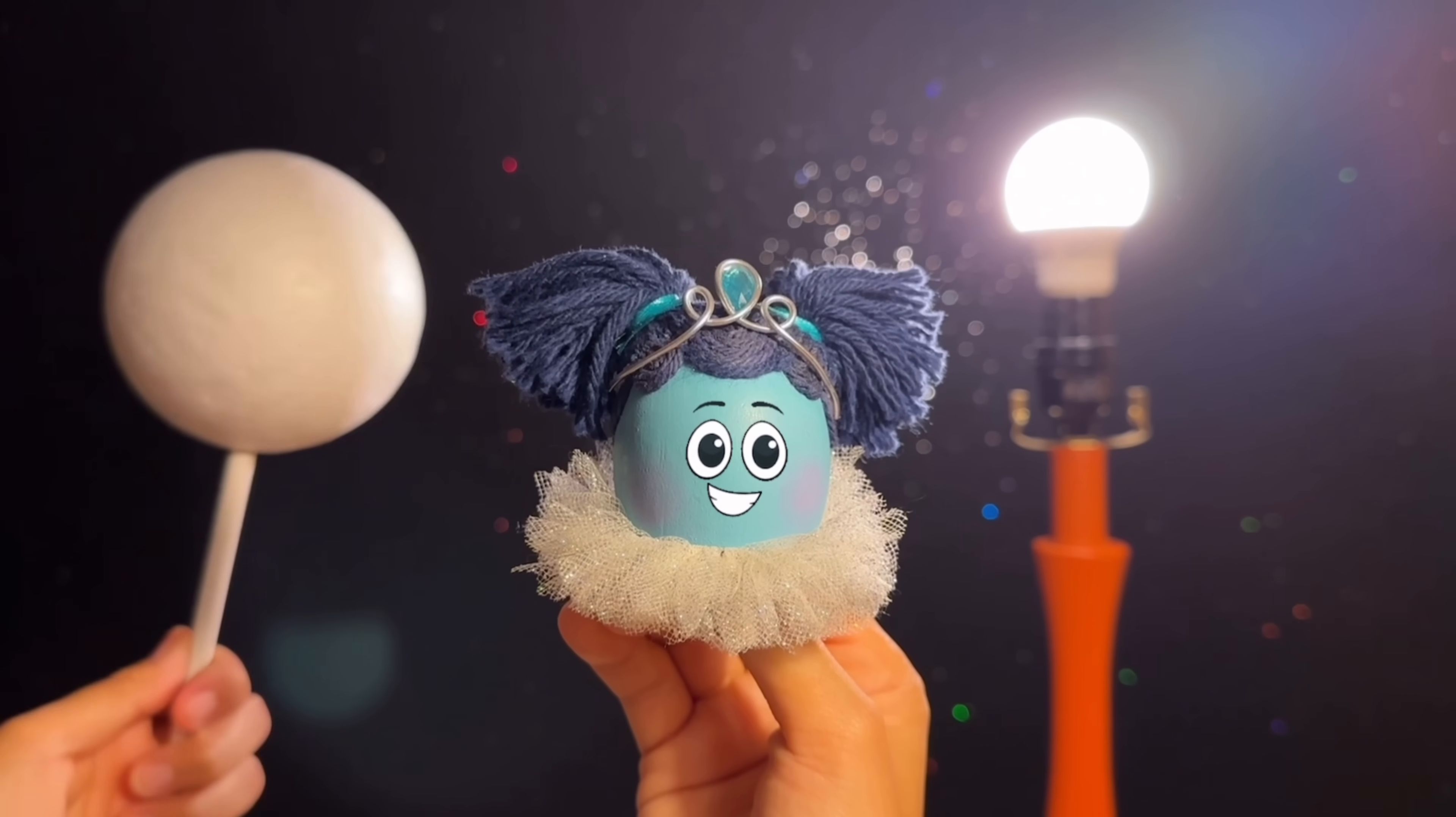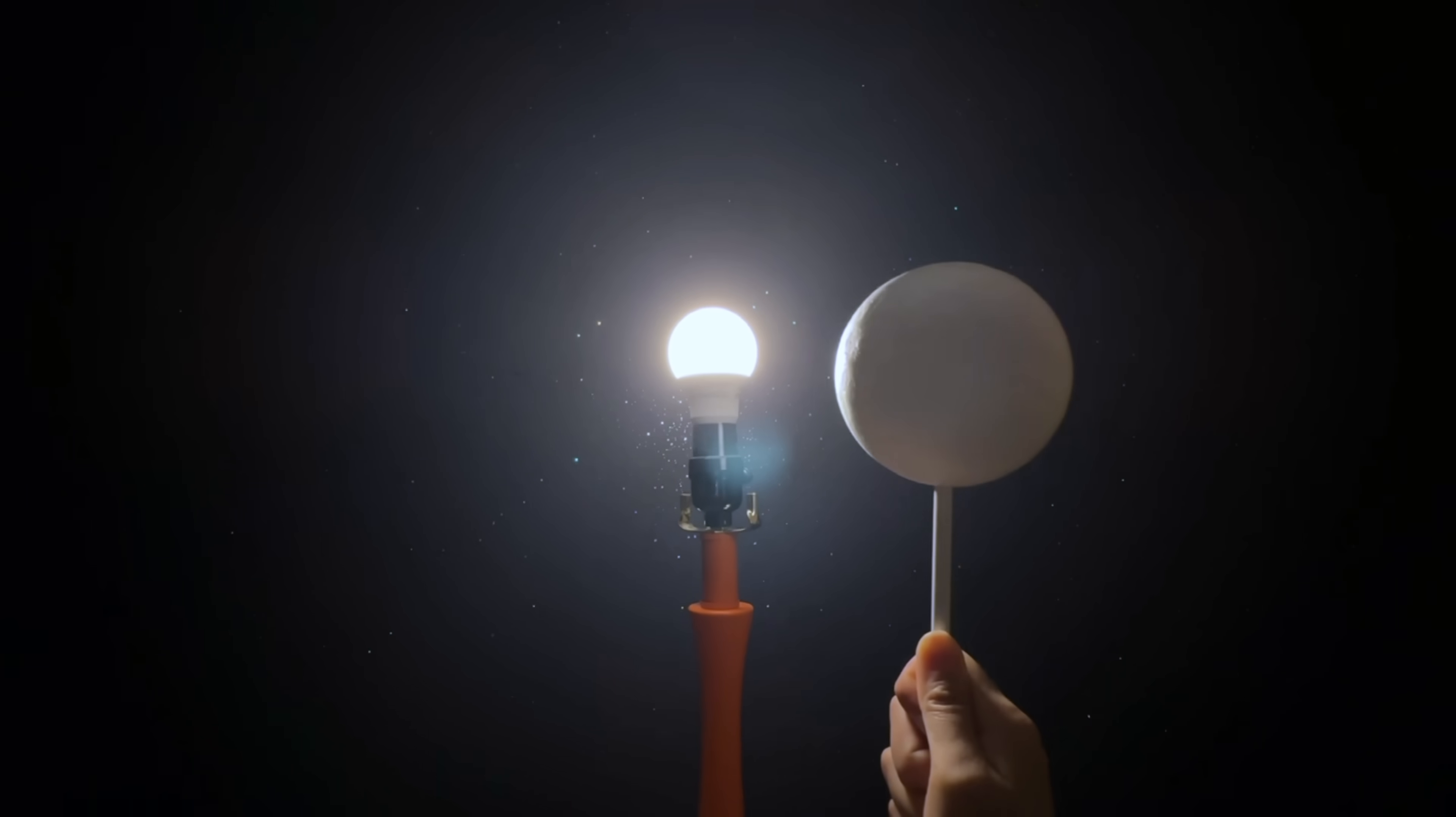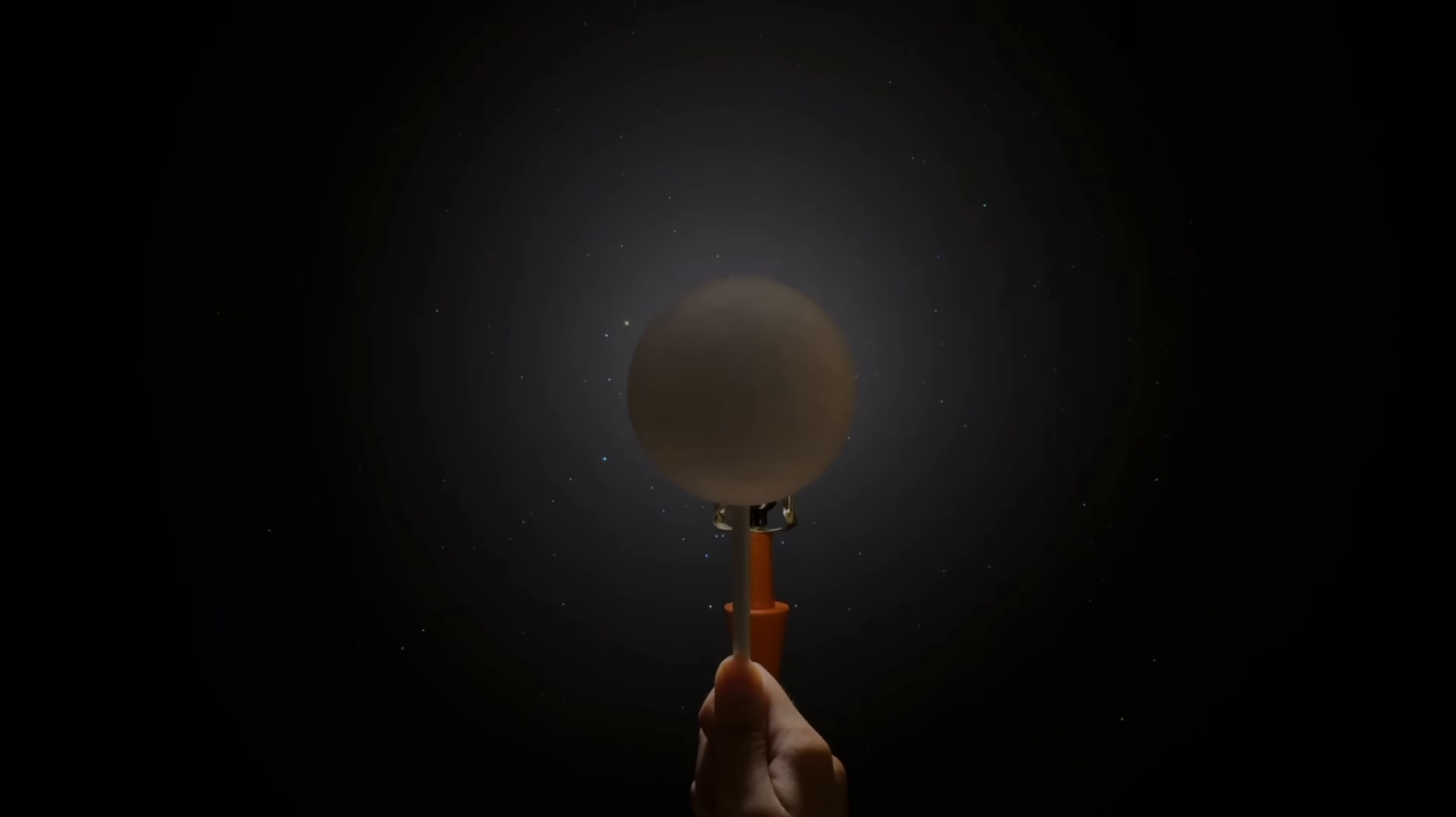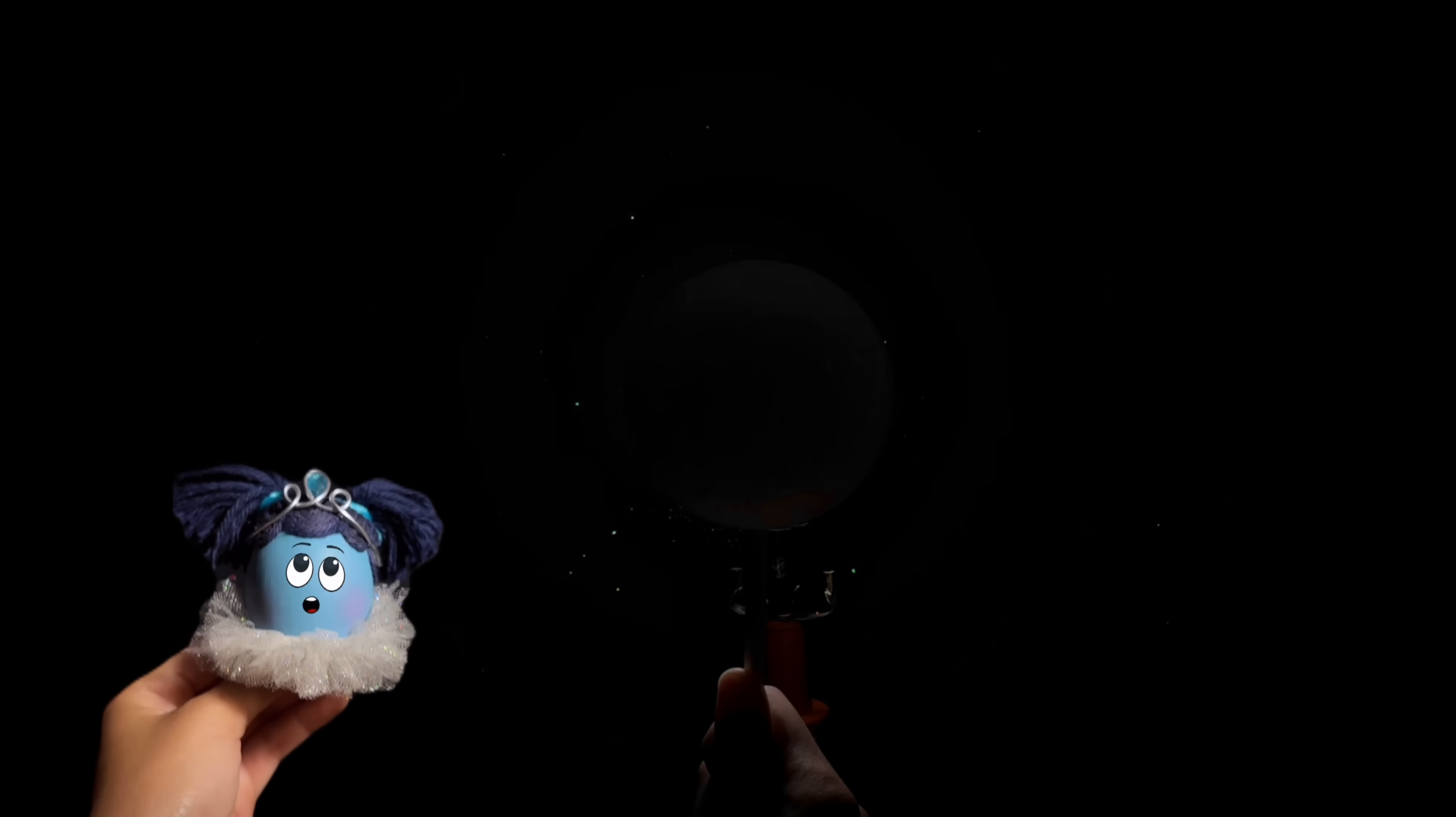This will be the moon that reflects the light of the sun. Now, hold up the moon so it blocks the sun. Notice that you can't see it because it's too dark. This is called the new moon.